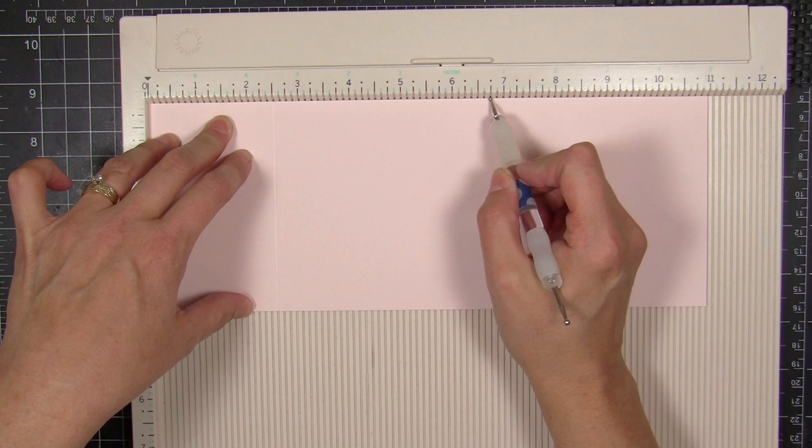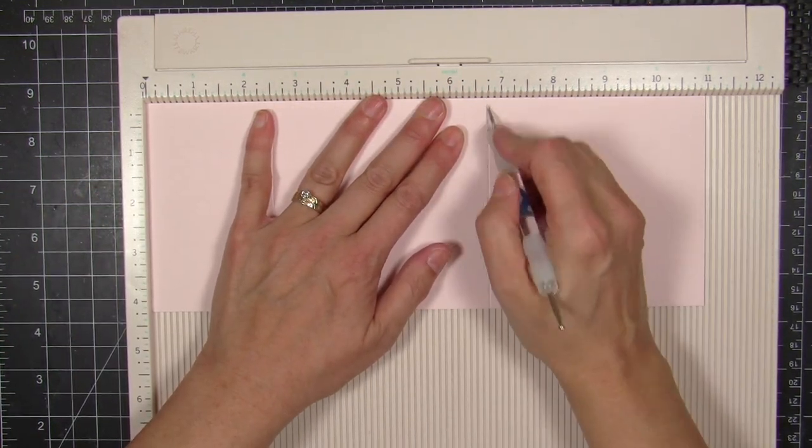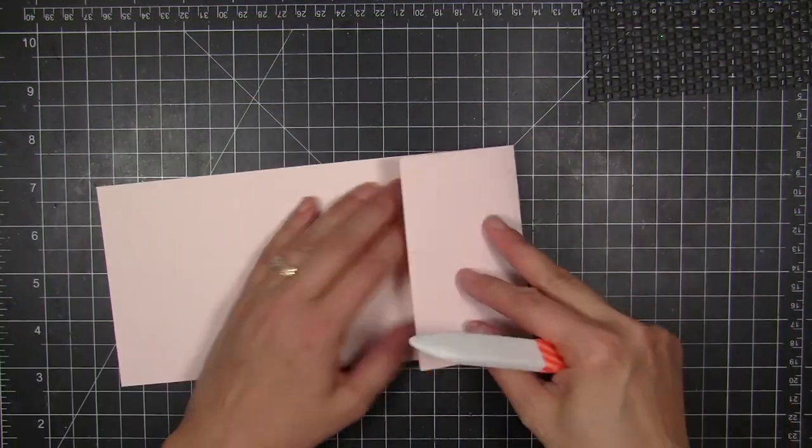So I'm going to start with a piece of card stock that measures four and a quarter by eleven inches, and then I'm going to score it at two and a half inches and then score again at six and three quarters. And I'll have all the measurements listed on the classroom blog so you can follow along.